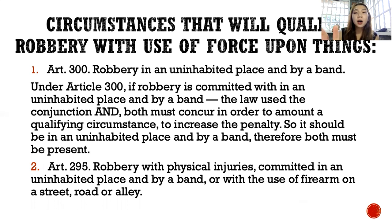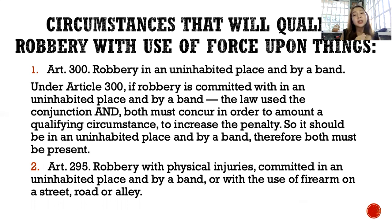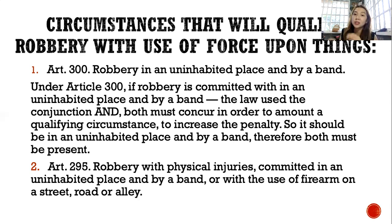Under Article 295, robbery with physical injuries committed in an inhabited place and by a band, or with the use of a firearm on a street, road, or alley. In this article, to qualify the crime, it is committed in an inhabited place OR by a band — the conjunction here is 'or.' Other qualifying circumstances include: by attacking any moving train, street car, motor vehicle, or airship; by entering the passenger's compartments in a train or taking passengers by surprise in their conveyances on a street, road, highway, or alley; and if intimidation is made with the use of a firearm. Only one of these is sufficient to qualify the penalty.